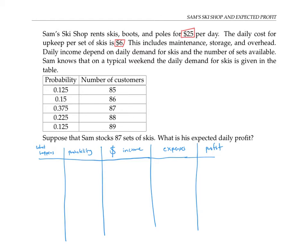So the things that could happen is we could get 85 customers with probability 0.125 or 86 customers with probability 0.15. I'm just copying this table down below.